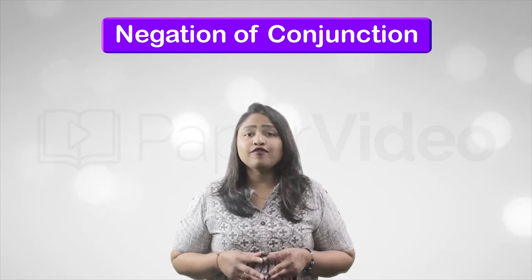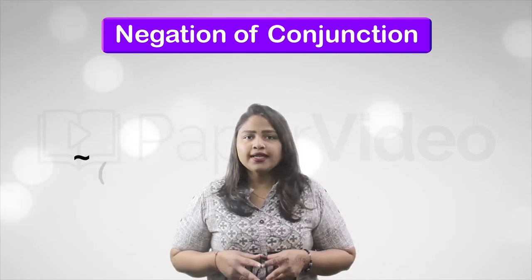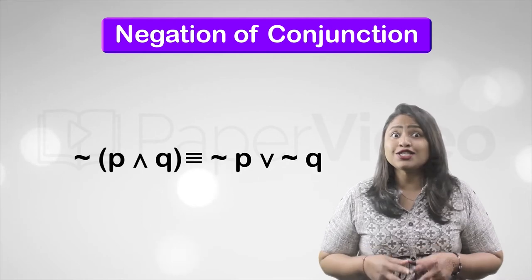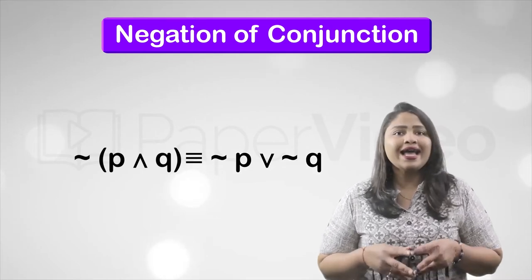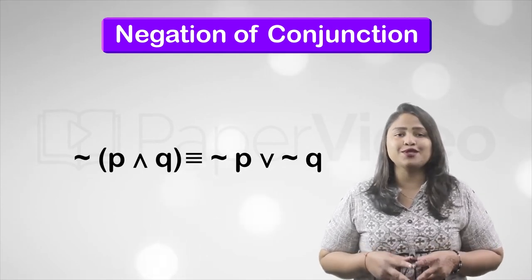First is negation of conjunction. To find the negation of conjunction, replace conjunction with disjunction and add negation to the component statements.